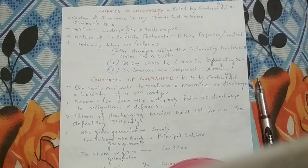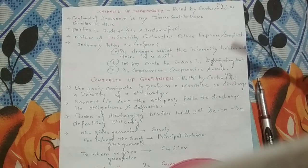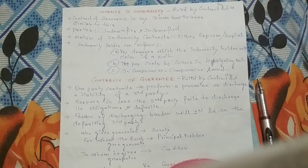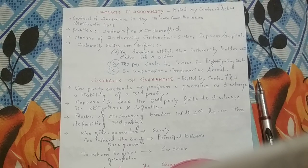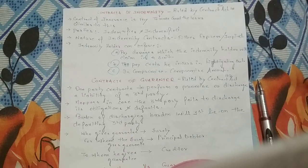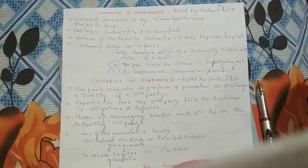The indemnity holder can enforce: pay damages which the indemnity holder will claim in a suit, and pay costs he incurs in litigating the suit. So the indemnity holder, who holds the insurance cover, if he goes to court, is liable to get all these compensations — the damages claimed in the suit, the costs incurred in litigating the suit which should be recovered from the indemnifier, and in a compromise, the compromising amount should also be given by the indemnifier to the indemnity holder.